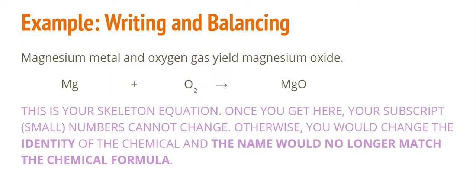This is our final skeleton equation. Once you get to this point, you can't change the small numbers, those subscript numbers, as they appear. So you'll look for all of these, look to see if there are any small numbers. The reason we can't change these numbers is because if we change those numbers, we're actually changing the identity of the chemical. And then our name that we worked so hard to go through and do all of these for, it would no longer match that chemical formula. So once you get your skeleton equation, you will not change any of these subscript numbers.